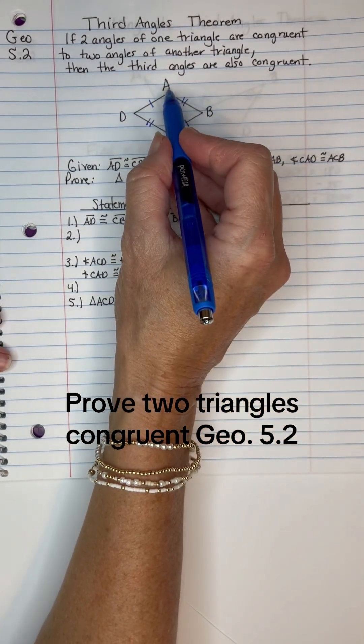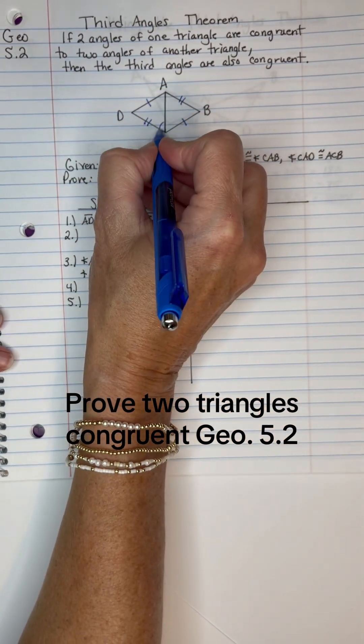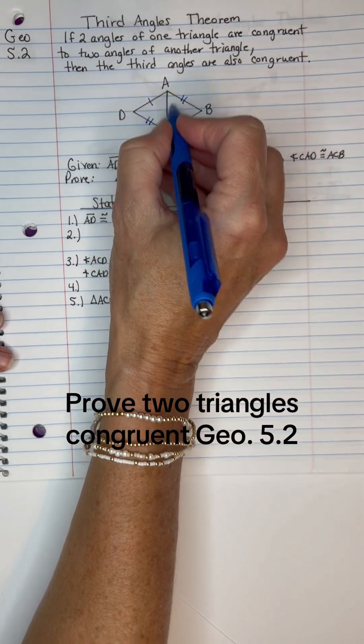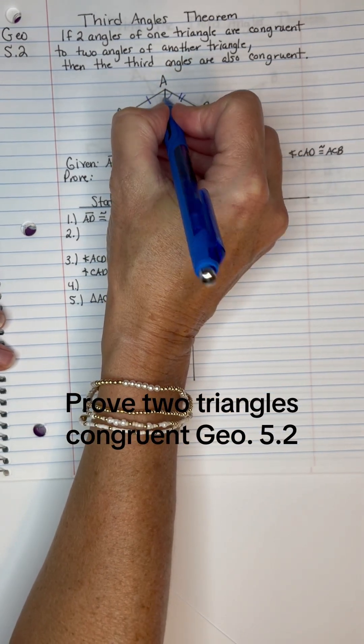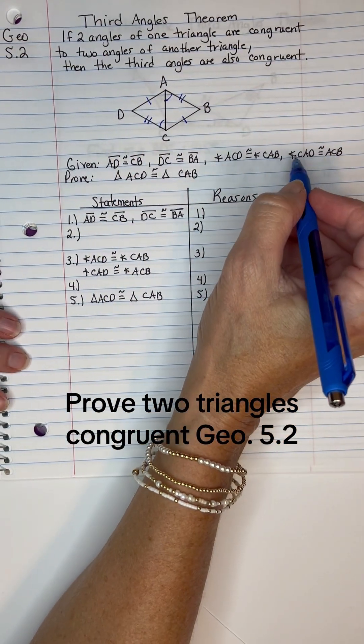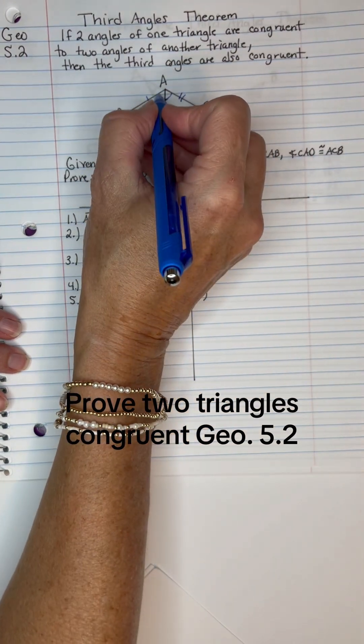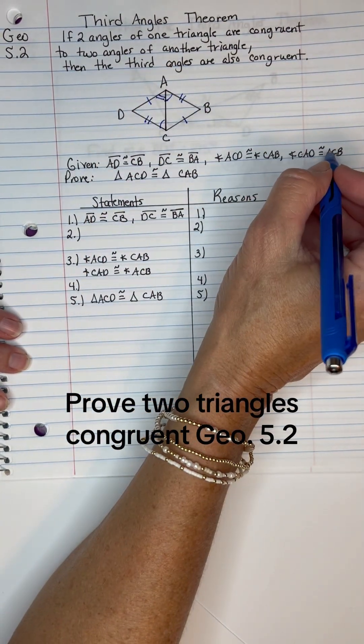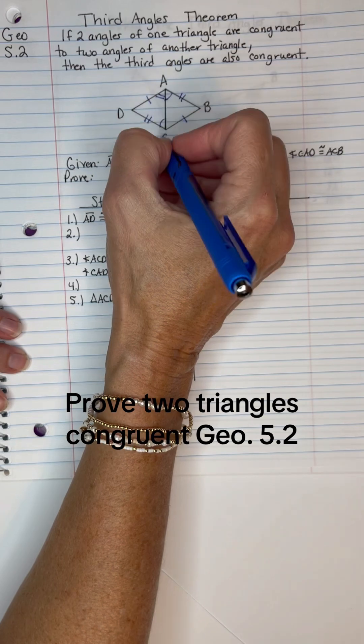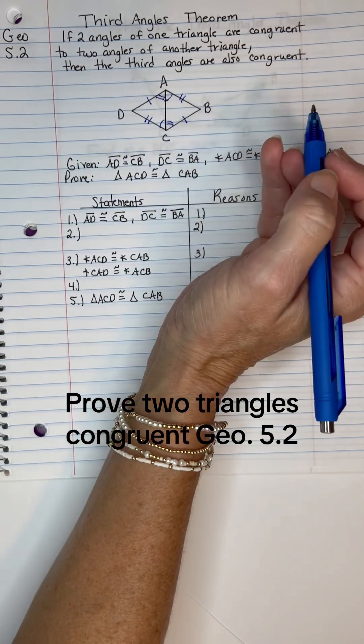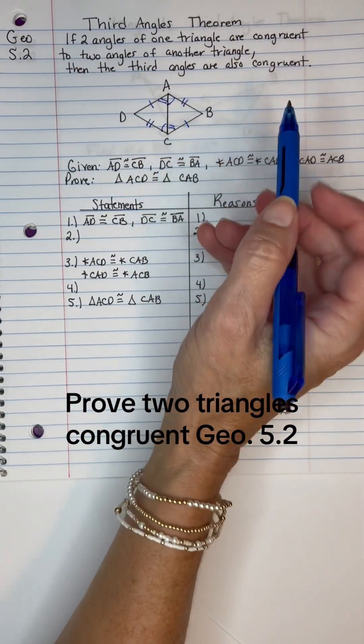So angle ACD, trace that, that's this one, is congruent to angle CAB, that's this one. Okay, and then angle CAD, that's this one, is congruent to angle ACB, that's this one. So this was all given.